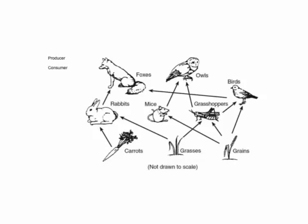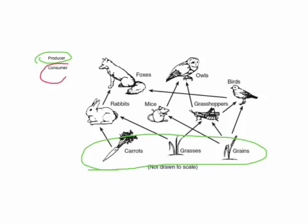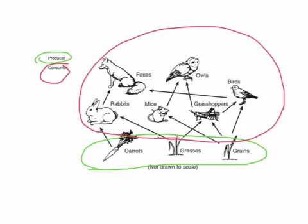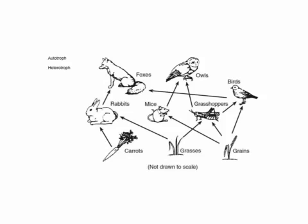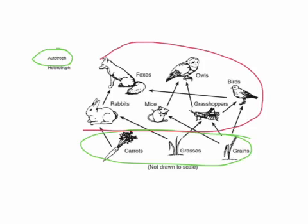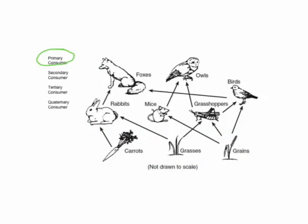So to go over this in a more complex food web, we're going to look first for the producers, which all circle in green. So remember, producers make their own food. We're looking for plants in this case. So carrots, grasses, and grains. Everything else, if it's not a producer, it must be a consumer. So all the animals are our consumers. And remember that autotroph and producer are the same thing, and heterotroph and consumer mean the same thing.